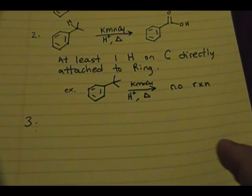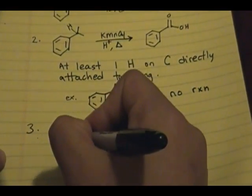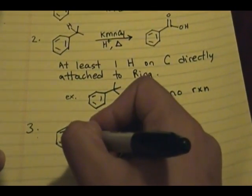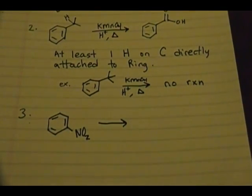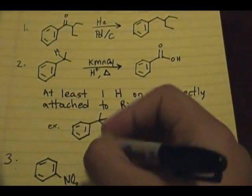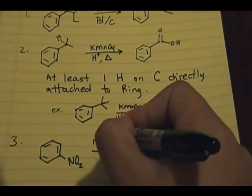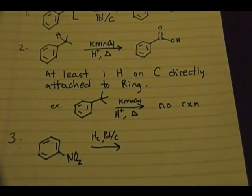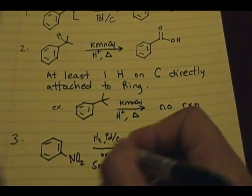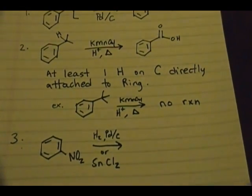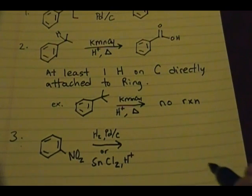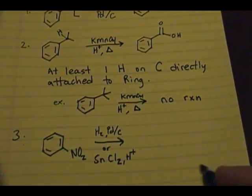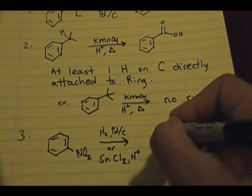The third reaction that occurs on substituents on the aromatic ring involves an NO₂ (nitro) group. If you have an aromatic ring with an NO₂ group, you can use either H₂ with a palladium-carbon catalyst, or SnCl₂ with H⁺ as a proton source. The result is that the NO₂ nitro group is converted to an NH₂ group.